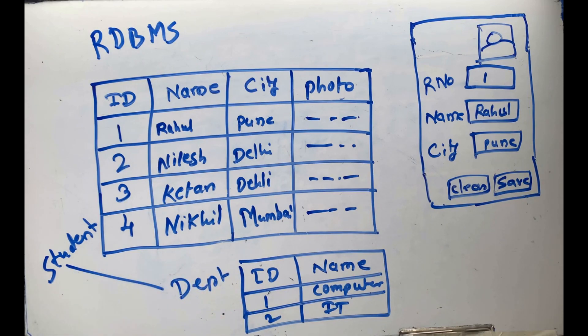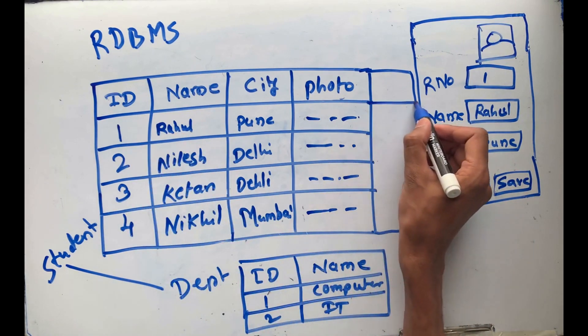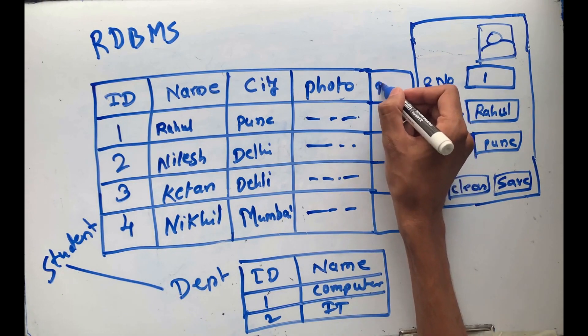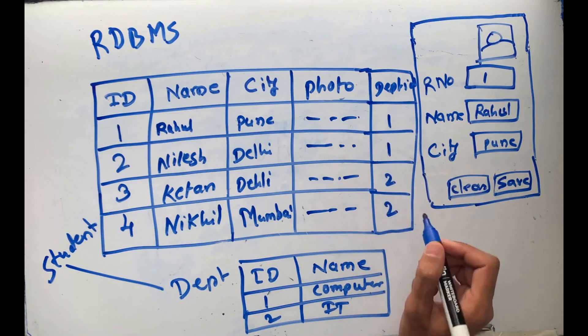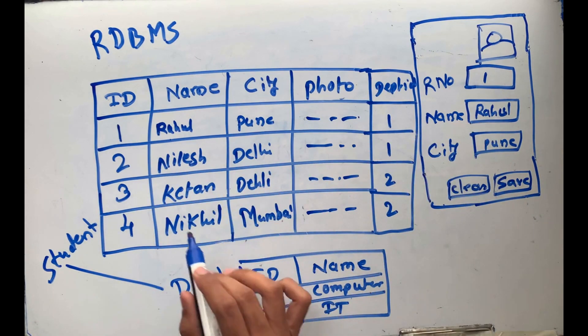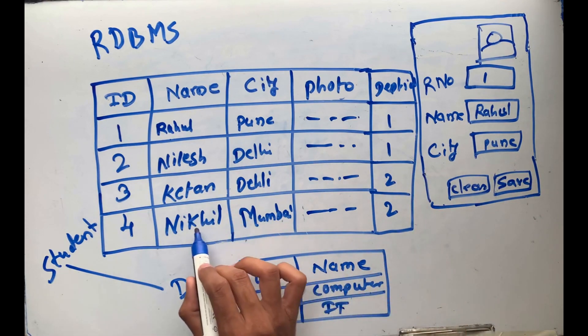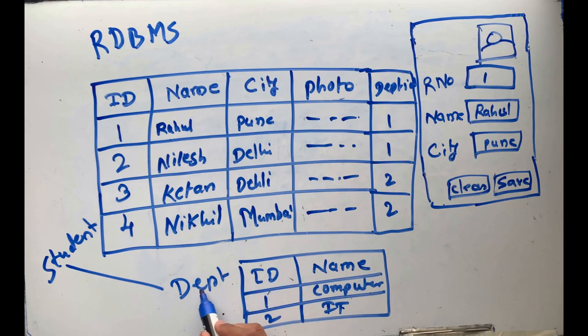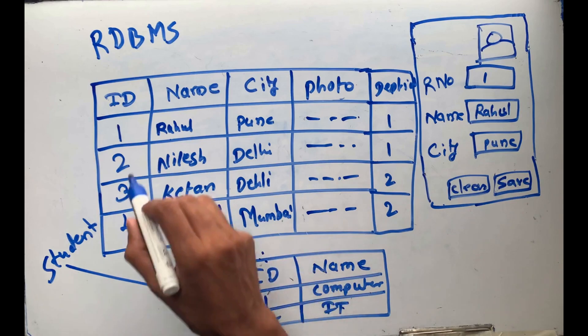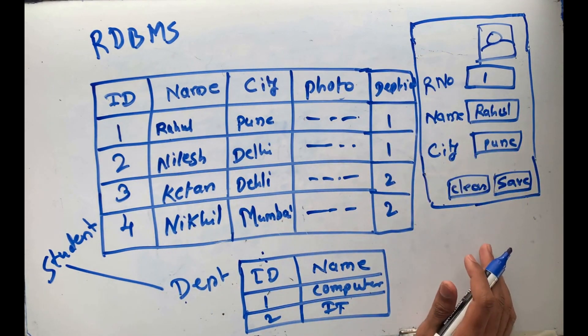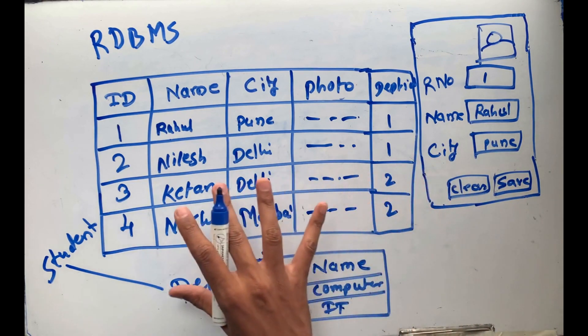These tables are related to each other with the help of keys. How can we identify which department a particular student belongs to? Here is the department ID. For example, 1, 1, 2, 2 - this means Rahul belongs to the Computer department, Nilesh belongs to Computer, Ketan belongs to IT, and Nikhil belongs to IT. The ID is the primary key in the department table that goes into the student table as a foreign key. They are connected with the help of keys, so this is known as Relational Database Management System.